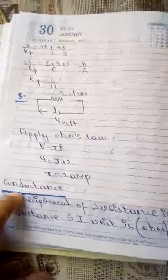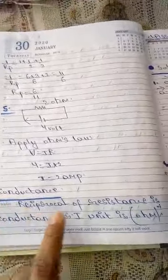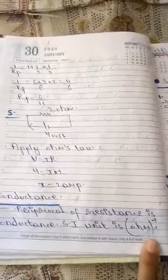So now the next topic is conductance. What is conductance? Conductance is the reciprocal of resistance and the SI unit is given by ohm inverse.